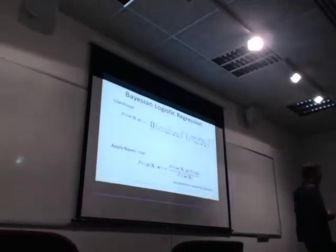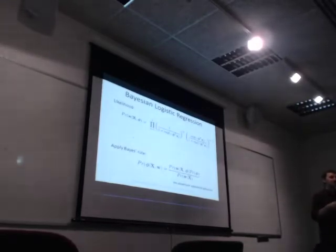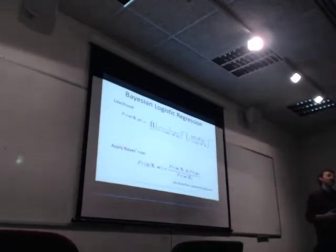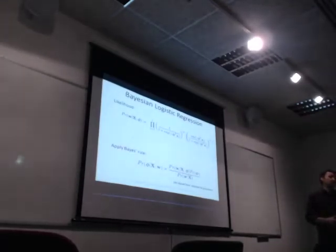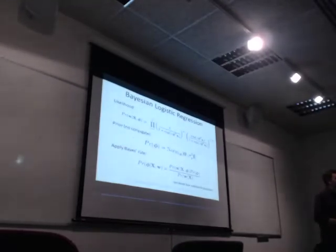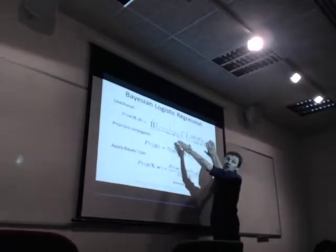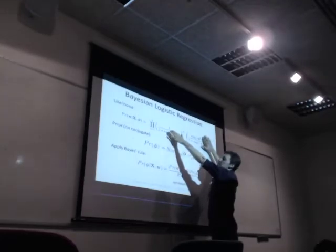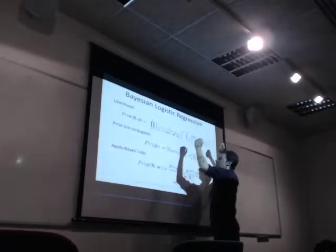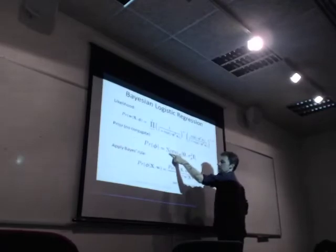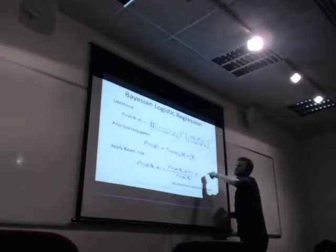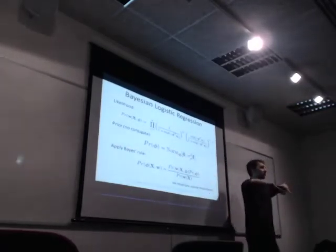We don't really have a way of setting up the parameters for the beta distribution — the beta distribution takes two further parameters — so we're going to use a normal distribution instead. We'll have a normal distribution centered at zero with some fairly large covariance.